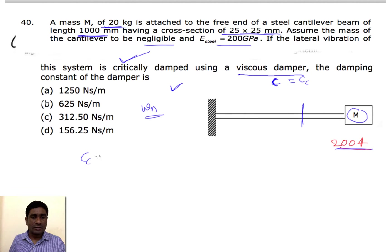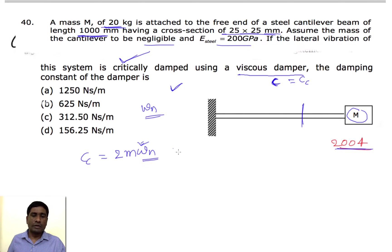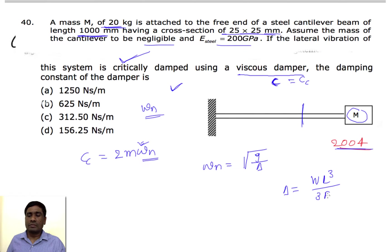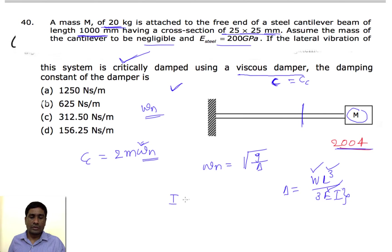cc = 2m·ωn. To find ωn, we use ωn = √(g / δ), where δ = WL³ / (3EI). W is in newtons, so W = m × g. L is given as 1 m. E is given for the material. We need to find I for the square cross-section.